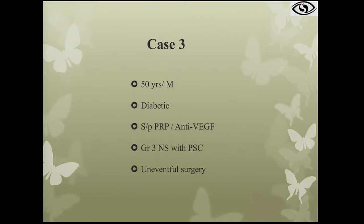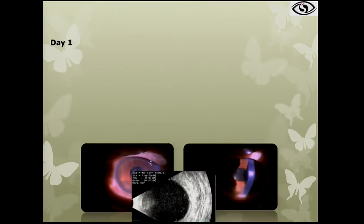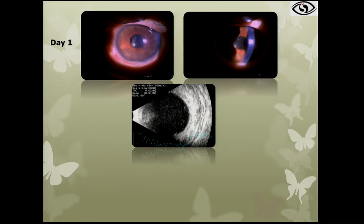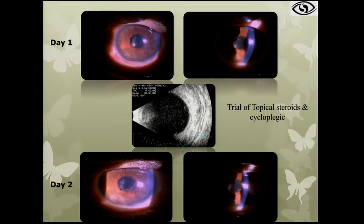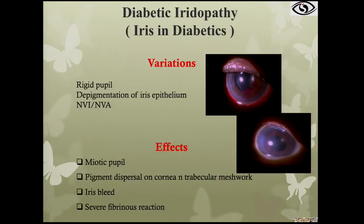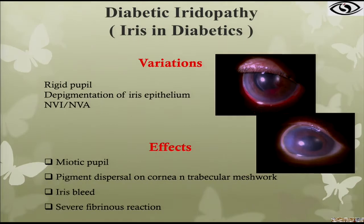Case 3: a 50-year-old diabetic patient who had undergone panretinal photocoagulation and anti-VEGF underwent uneventful cataract surgery. His eye was inflamed and B-scan showed minimal vitreous involvement. A trial of topical steroids and cycloplegics resulted in a beautiful response. We must remember that diabetic patients have diabetic iridopathy — rigid pupils and depigmentation — which leads to more severe post-operative inflammation that can mimic endophthalmitis.